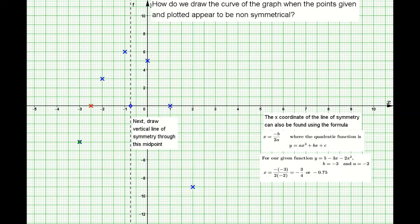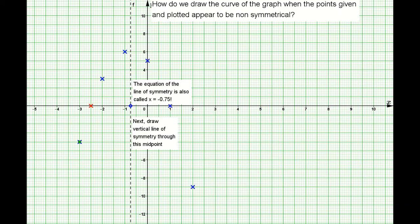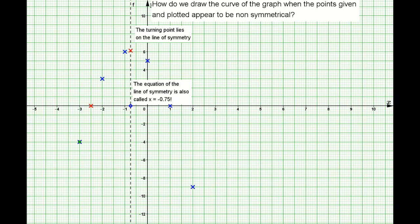This is how we can get the line of symmetry: draw a vertical line parallel to the y-axis through this midpoint that you just found. The equation of the line of symmetry, since all the x-coordinates are negative 0.75, is x equals negative 0.75.